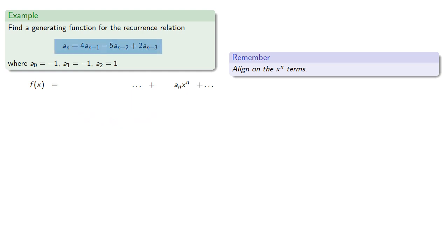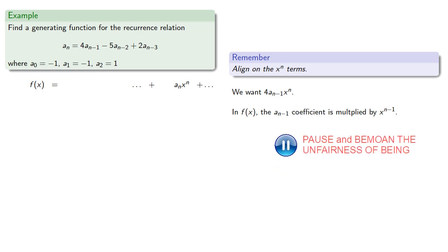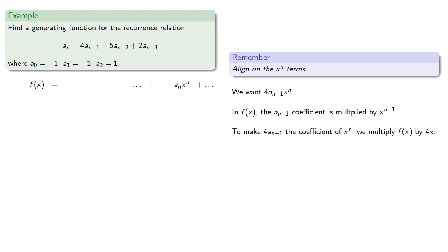Our recurrence relation has a term for a_{n-1}, and we want that to be an x^n term, so we want a_{n-1} x^n. Now in our function, the a_{n-1} coefficient is multiplied by x^{n-1}. And so to make a_{n-1} the coefficient of x^n, we need to multiply f by 4x.